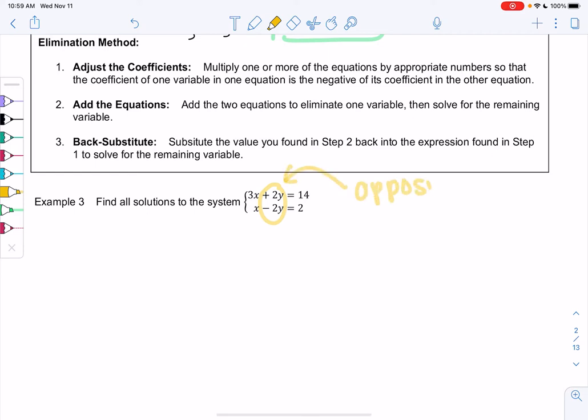So step one is done. In later examples, I'll show you how to do that step. And then step two says to add the equations. So I'm just going to do the top one plus the bottom one. So 3x plus x gives me 4x. Elimination is eliminating the y's. So 2y minus 2y, they cancel out, equals 14 plus 2, or 16. And that's elimination.